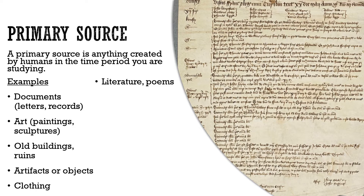Literature, poems, anything written down — even if artistic — is a primary source. It's an expression of the writer who was alive in that time, so their ideas and feelings are all considered relevant primary sources. And of course, anything dug up out of the ground from that time period, such as bones or other archaeological remains, are all primary sources.